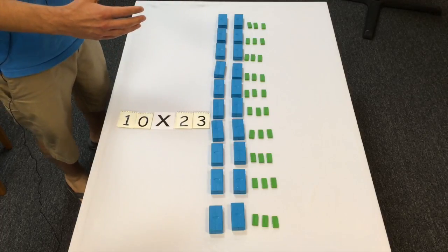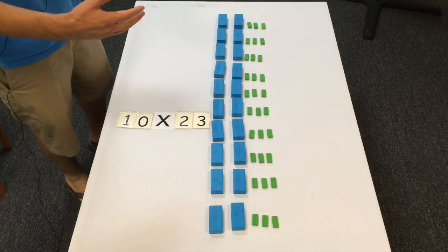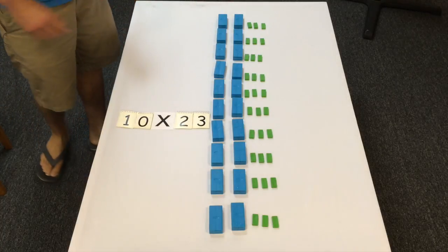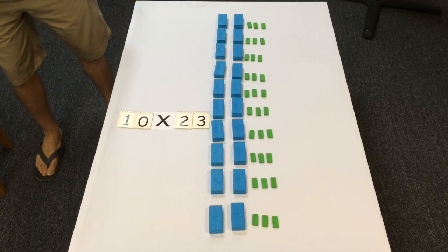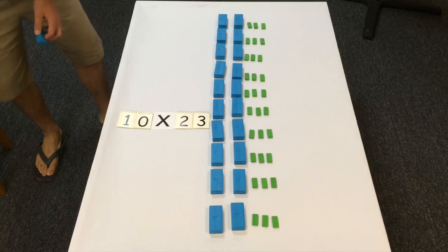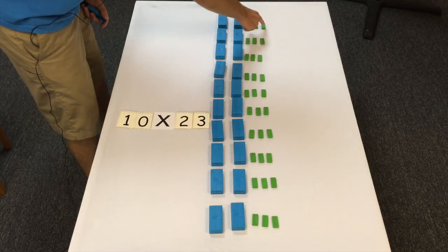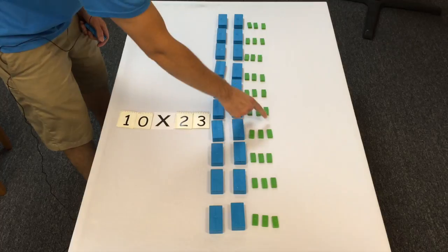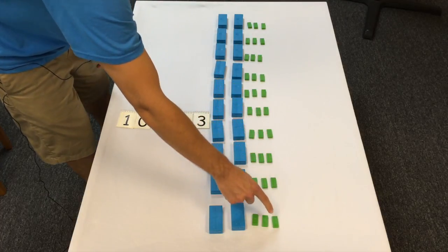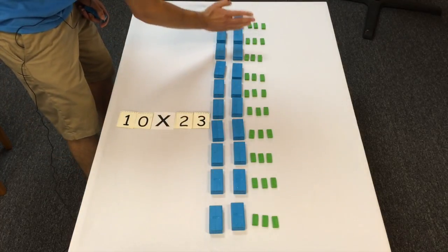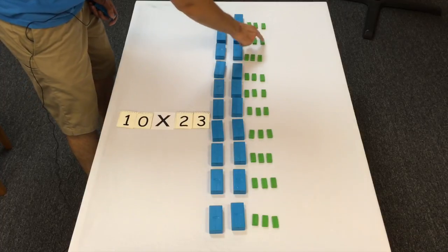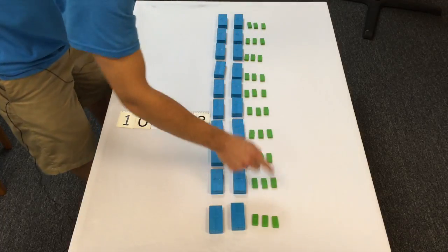So the way we're going to pack is we're going to work with these columns. I'm just going to take all of these ones. How many ones are here? Now remember it's 10 rows, so there are 10 ones right here. I'm going to pack them up.